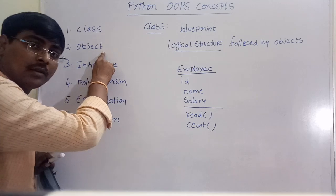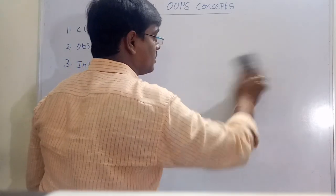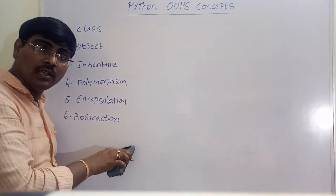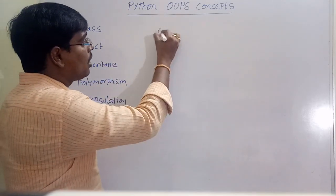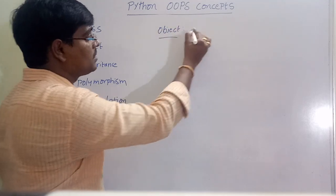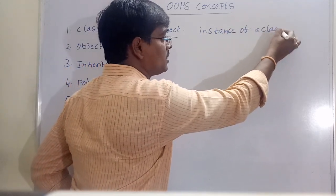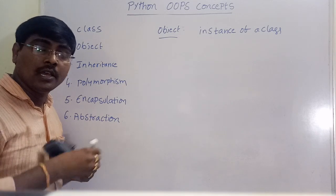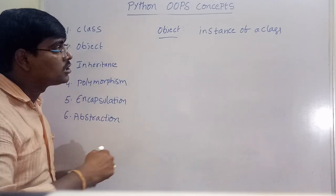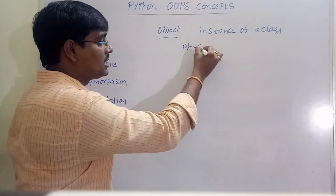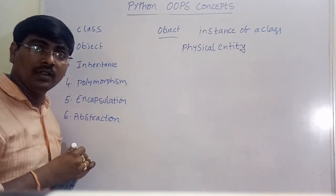Now let's move to object. We will discuss each concept with examples later; here I will explain the concepts only. An object is simply an instance of a class. A class defines the logical structure, and the object is a physical entity.